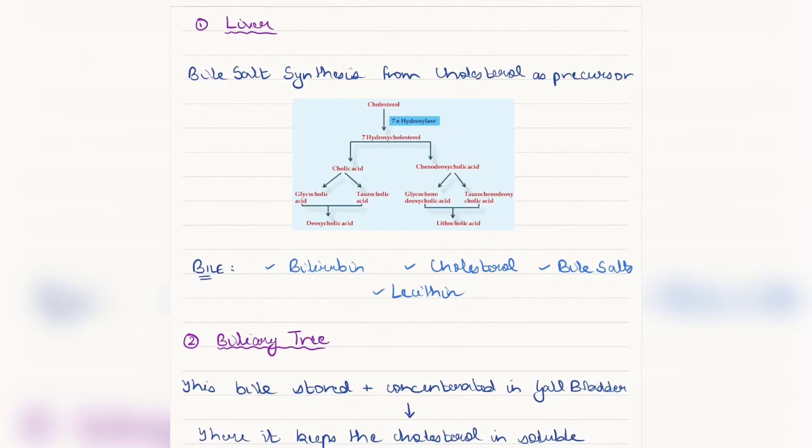As you all know that bile is made up of bilirubin, majorly bilirubin, cholesterol, bile salts, and lecithin. There are many other substances, but they are present in very minute amounts. The most important part of it is bile salts.